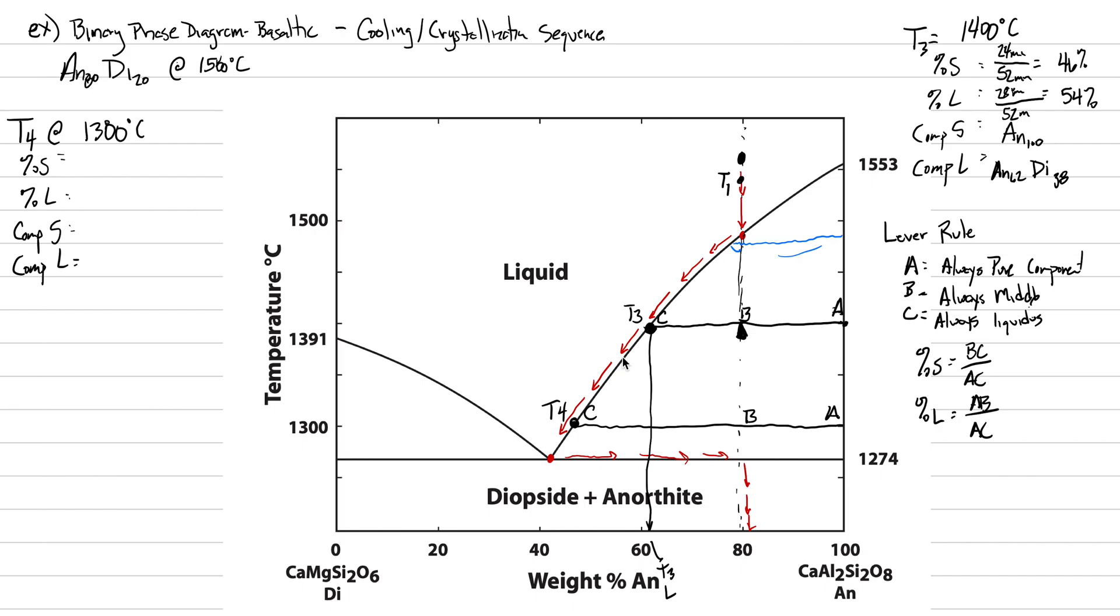Let's do the lever rule. The length of my total line is 74 millimeters. The length of the liquid part AB is 27, and the length of my solid part is 46. So 46 divided by 74 is 62% solid. 27 divided by 74 is 38% liquid. Depending on how big your sheet is, you're going to have a different amount of millimeters, but the ratio should be the same. You should probably be within plus or minus 5% of these estimates.